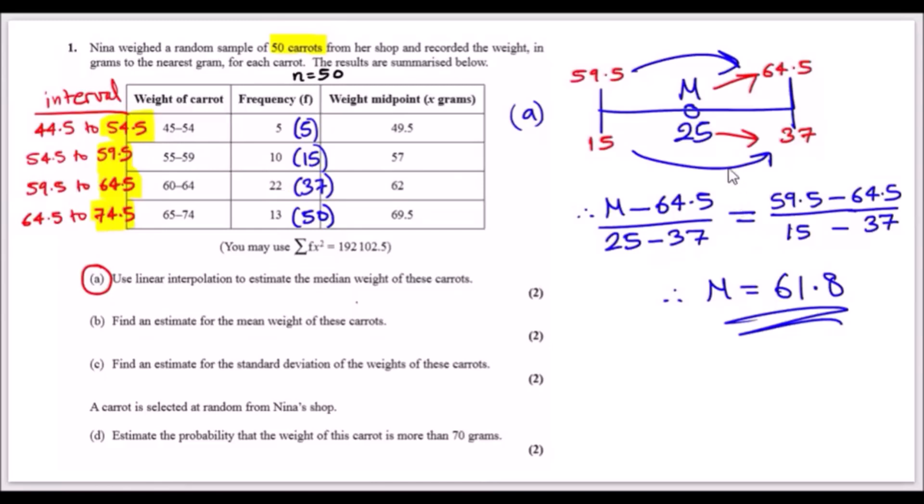To actually solve it, I treat this like a ratio. I write m minus 64.5 over this proportion, which is 25 and 37. I always match them up and make an equal sign with another relationship. I chose in this case 59.5 with 64.5 and of course its corresponding one, 15 and 37, so they must be corresponding. Then you just solve for m, and that's it: 61.8.